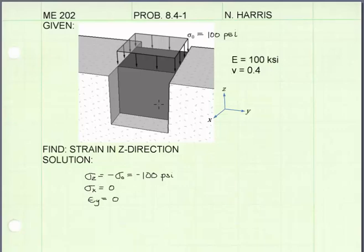We know that sigma z is equal to this compressive stress, which is 100 PSI, negative for compression. We know that the normal stress in the x-direction is equal to 0. The normal stress in the y-direction, well, we don't know that.